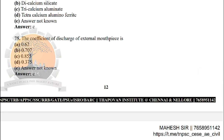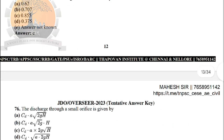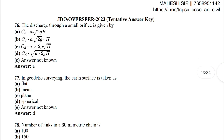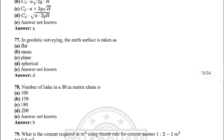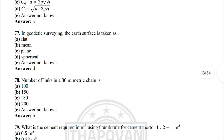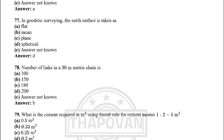Next: the coefficient of discharge of an external mouthpiece is — the correct answer is option C: 0.855. Next: the discharge through a small orifice is given by — the correct answer is option A: Cd × A × √(2gH).